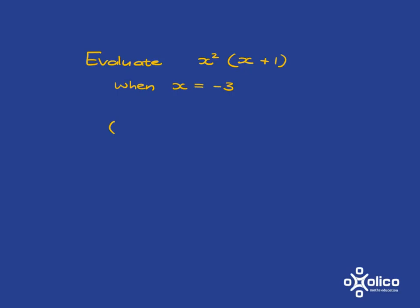OK, so wherever you saw an x, you needed to put a minus 3. So remember, it's the whole of x that's squared, so it's the whole minus 3 that gets squared. And then you have minus 3 plus 1.